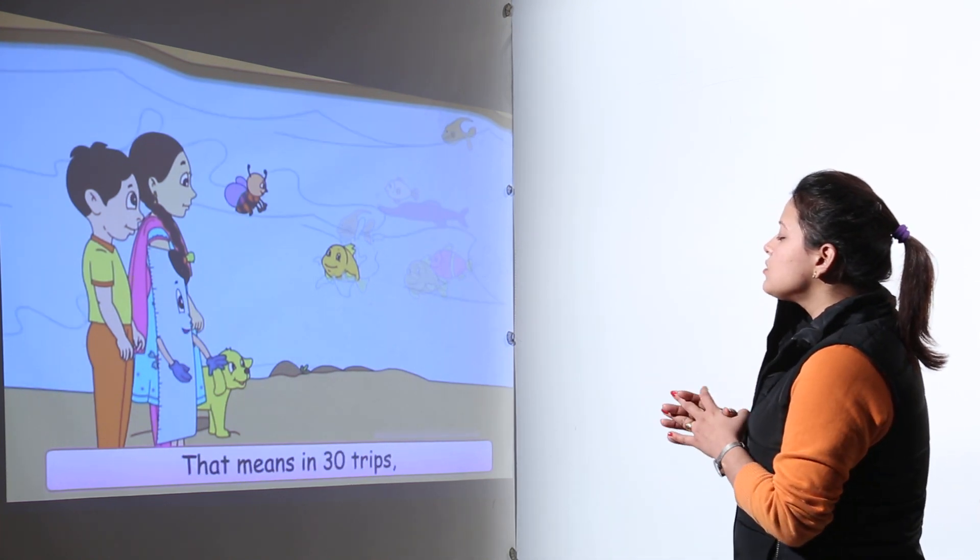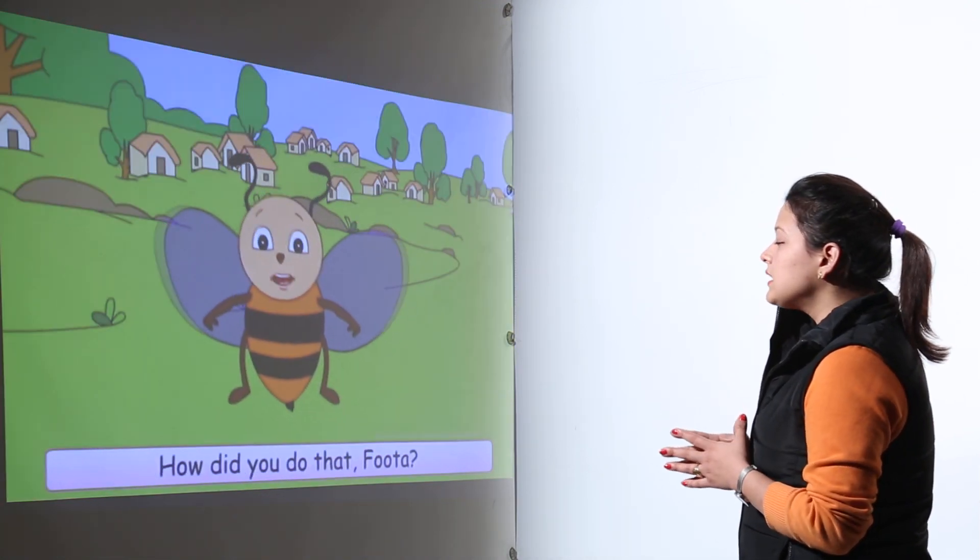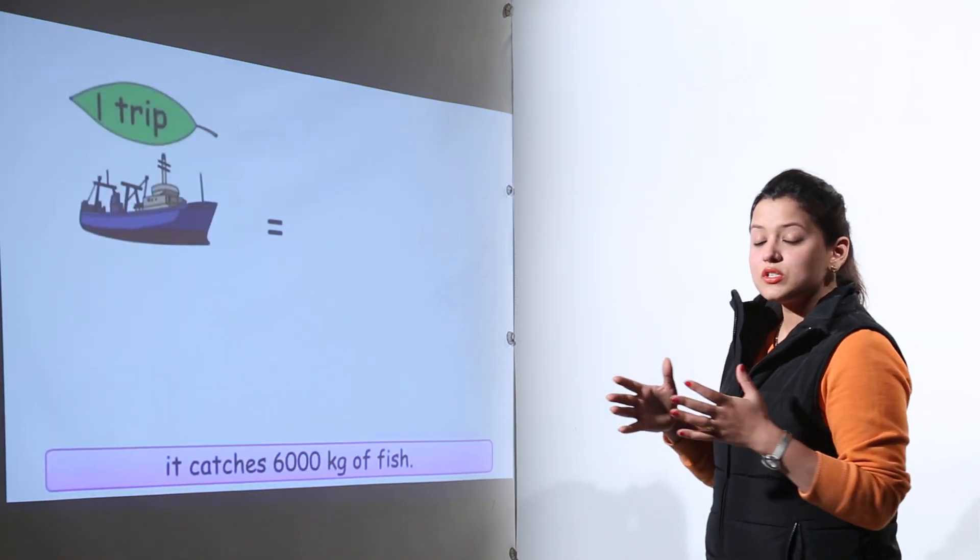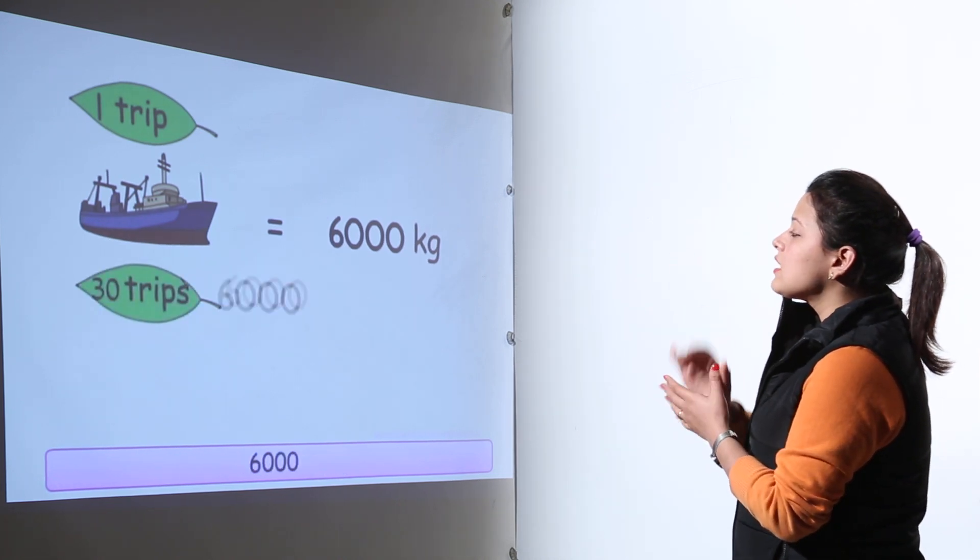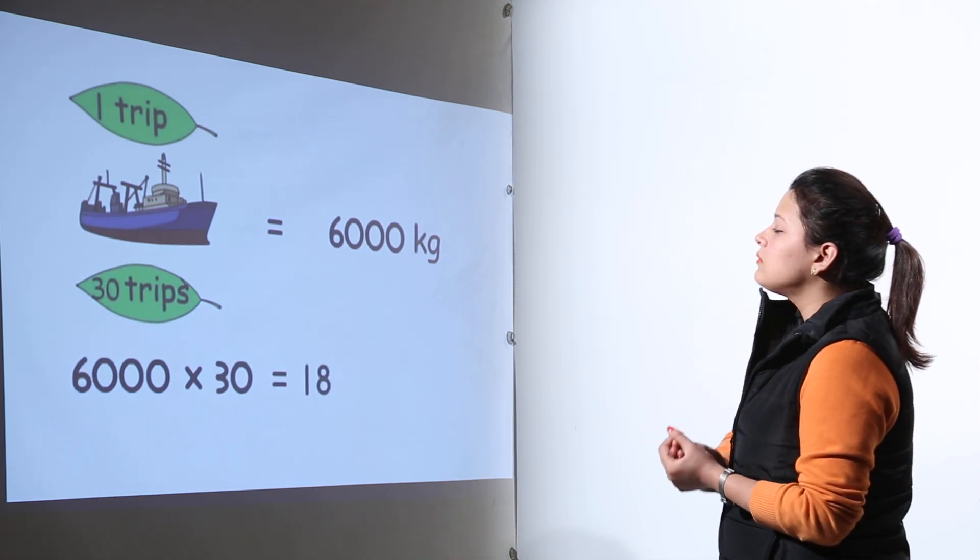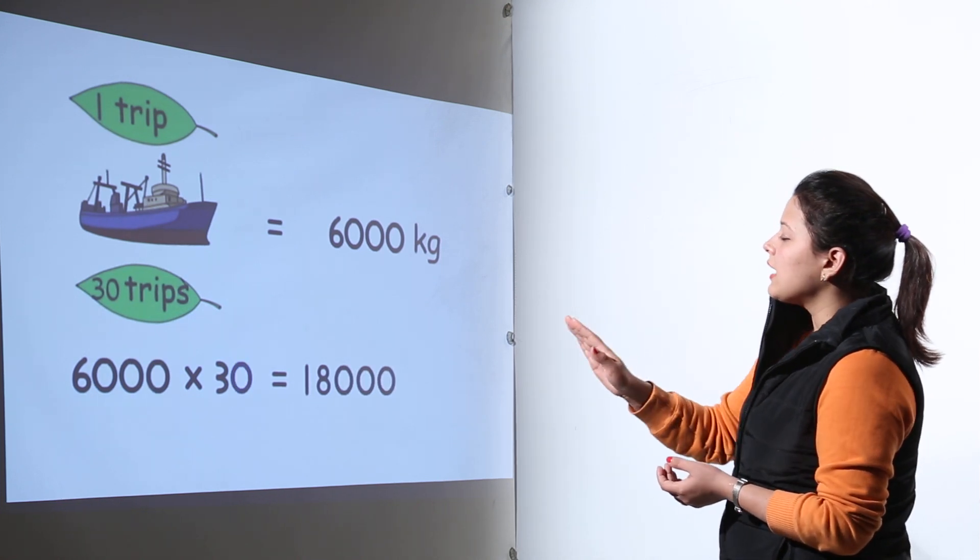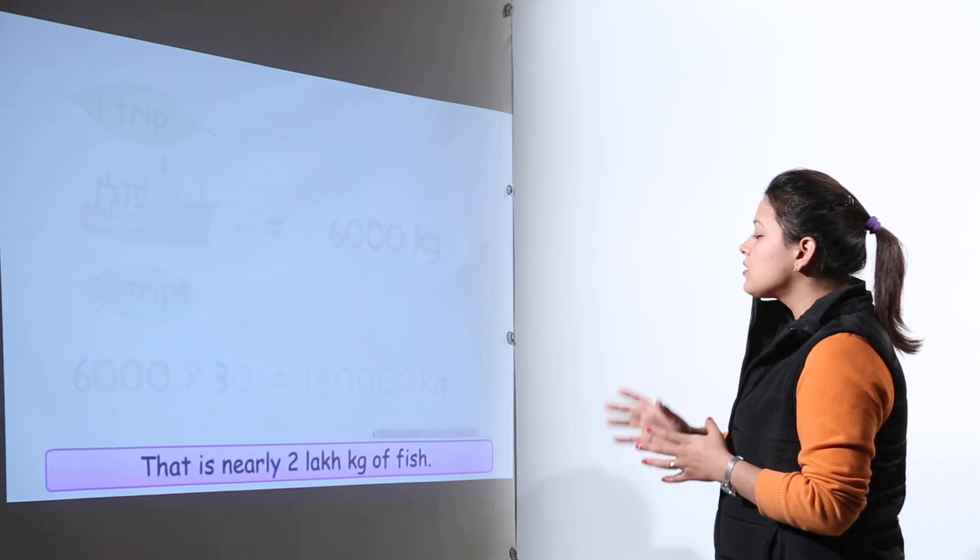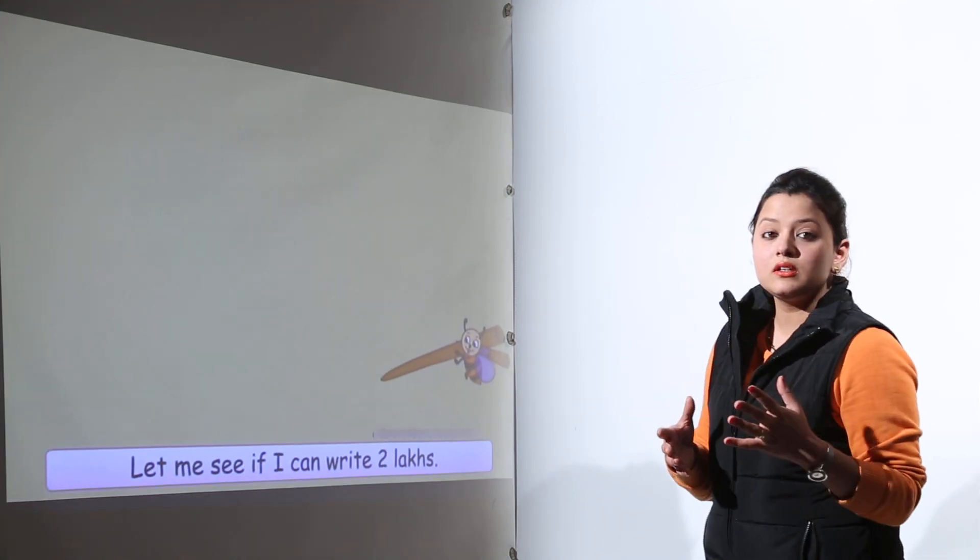So 6000 kg of fishes caught in one trip. By that we can say that so much amount of fish is caught in single time. As you can see that one trip gives 6000 kg. If a ship makes 30 trips, how much fish will be caught? That will be 18. You can see that 3 into 6 is 18 and adding 4 zeros. That makes 180,000 kg. Approximately 2 lakh kg of fish are caught when a ship makes 30 trips.